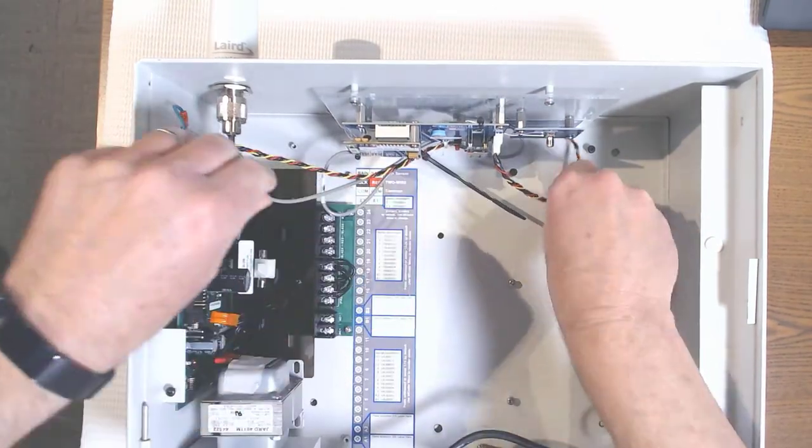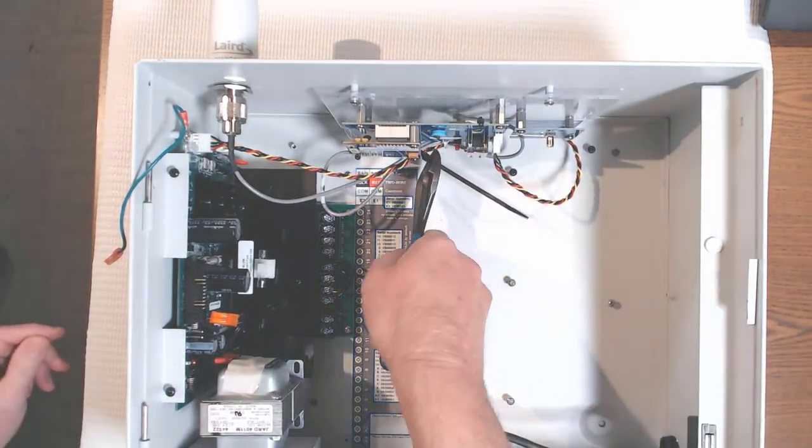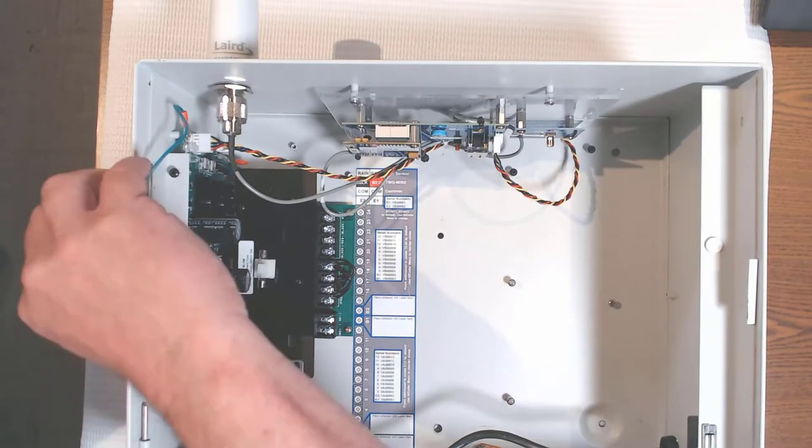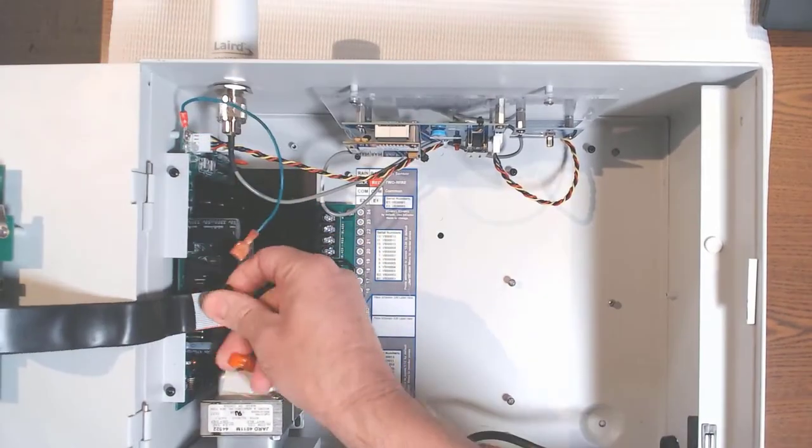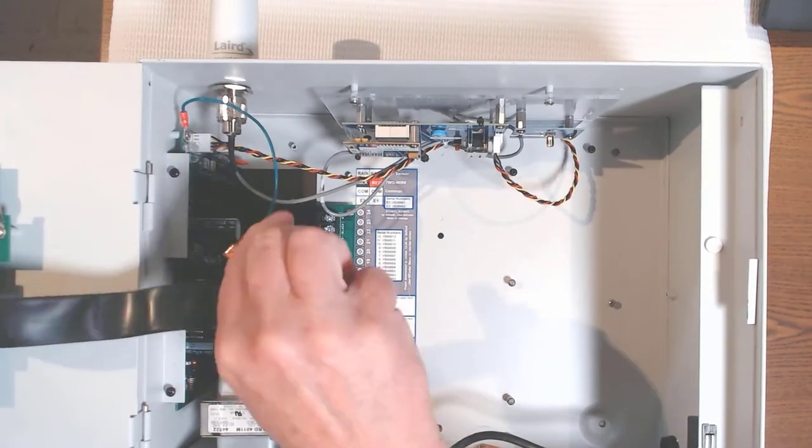Use the zip tie to secure both the power cable and the antenna cable so they aren't damaged. For this demonstration, I pulled off the front panel, so I'll reinstall that, connect the ribbon cable and the ground wire, and then power up the controller.